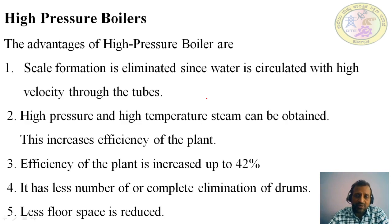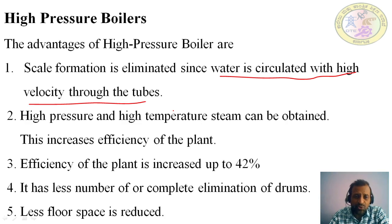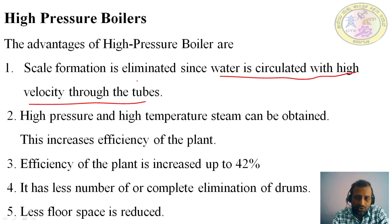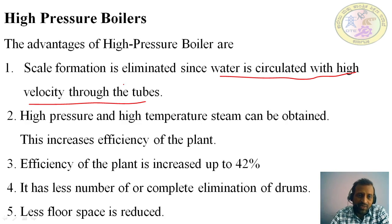In a high pressure boiler, water is circulated with high velocity through the tubes. When water flows at high velocity, deposition of impurities on the inner surface of the tubes does not happen. In the high pressure boiler, water is fed inside the tubes with the help of a centrifugal pump — this is forced convection. Because the velocity is high, the time available for impurities or sediments to deposit is not sufficient, so deposition is completely avoided.